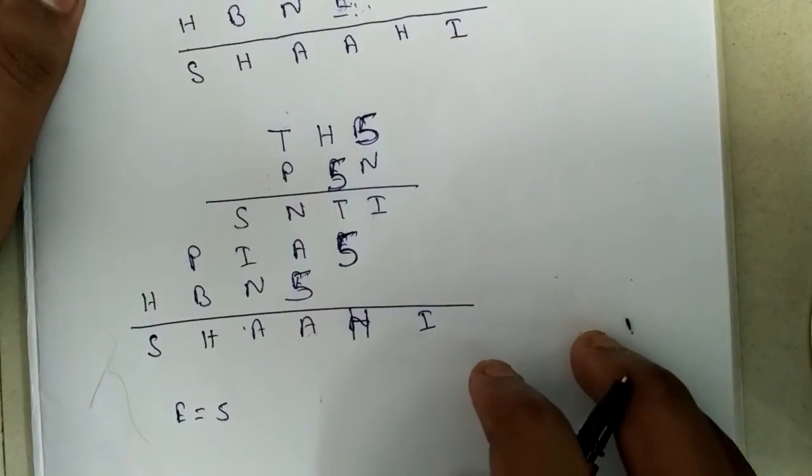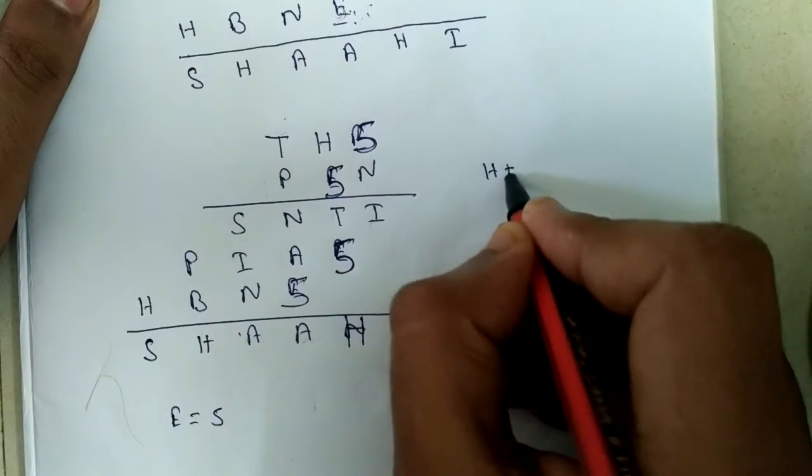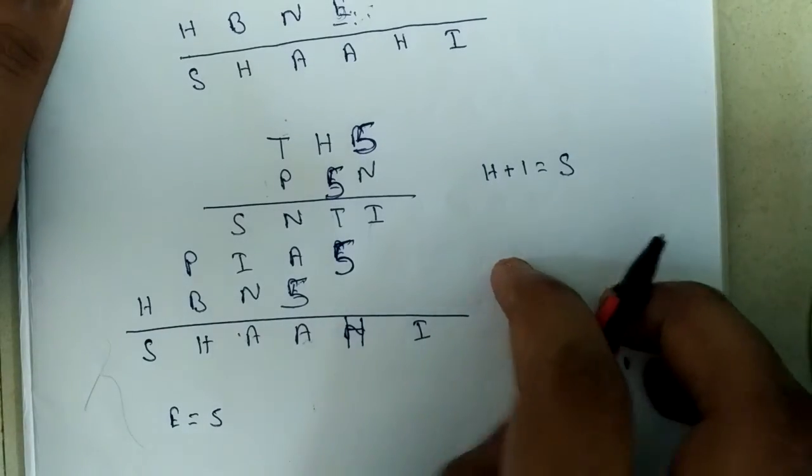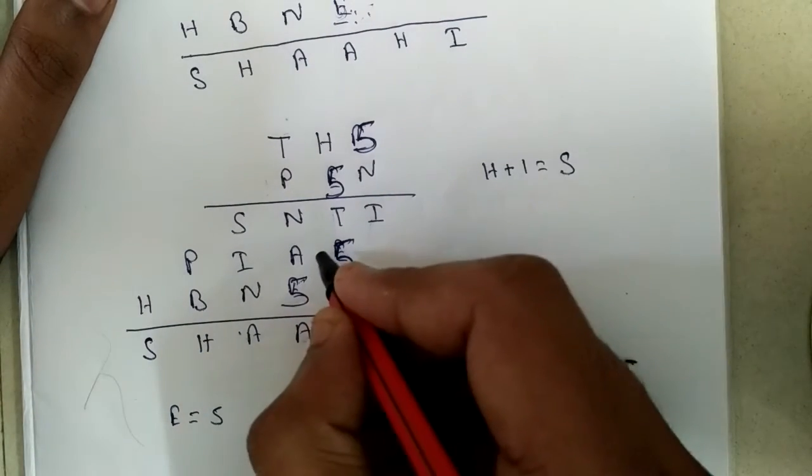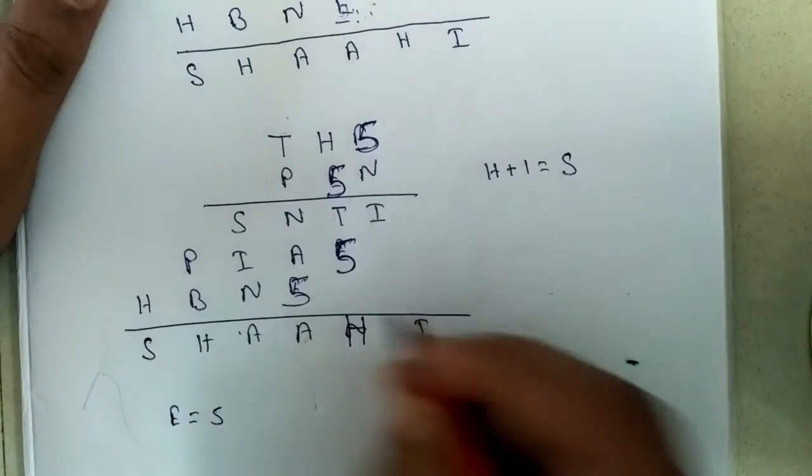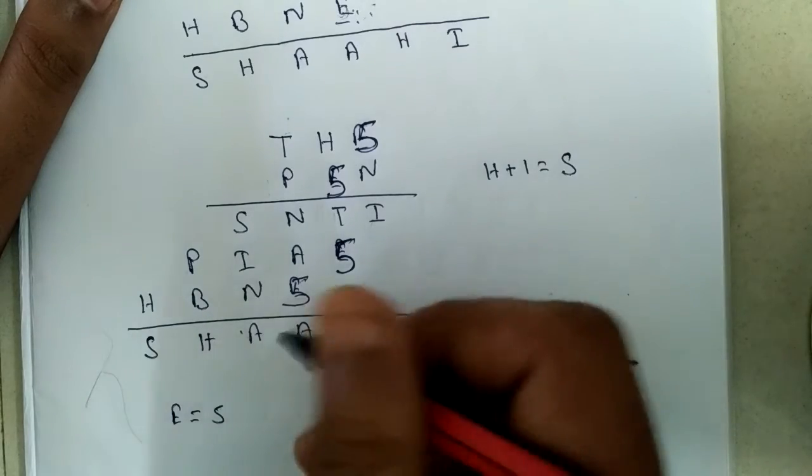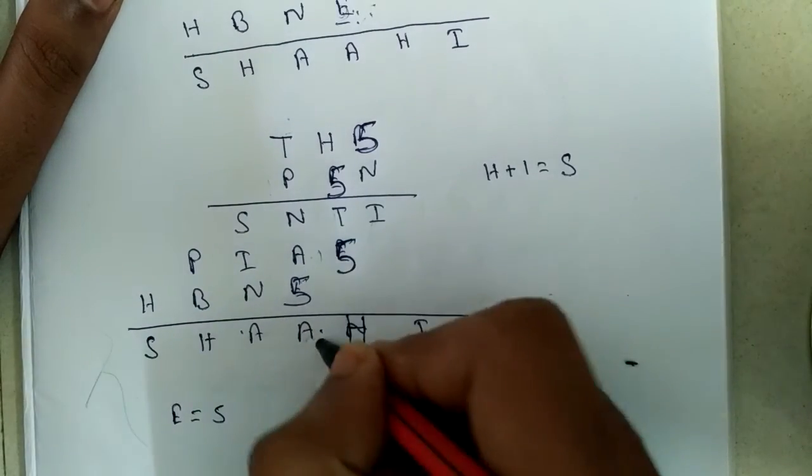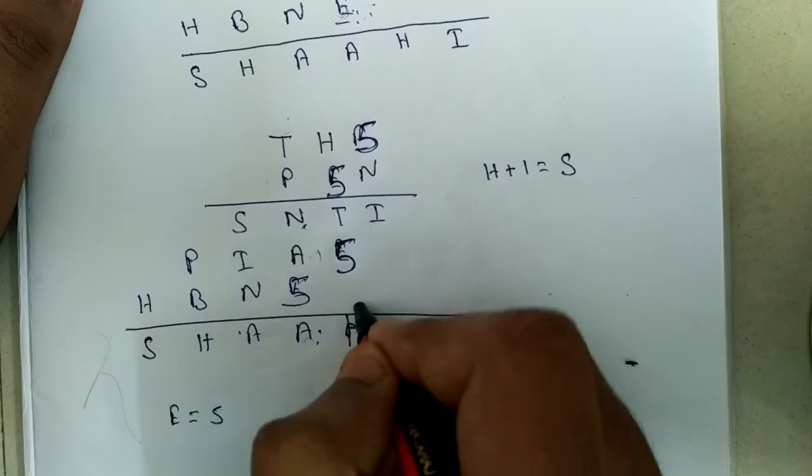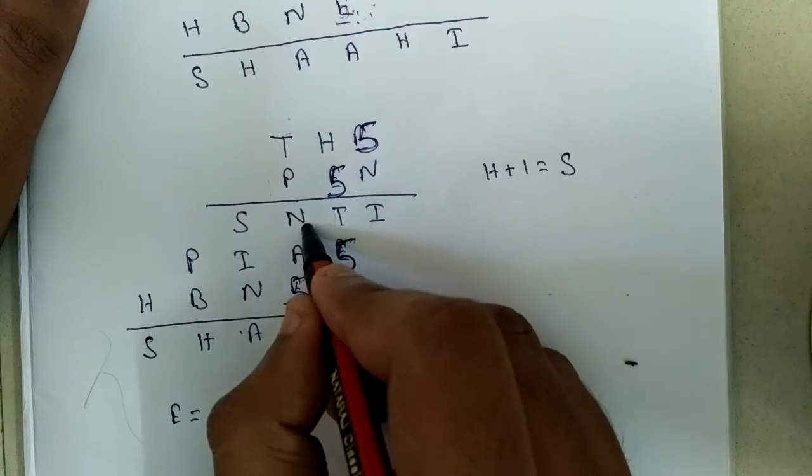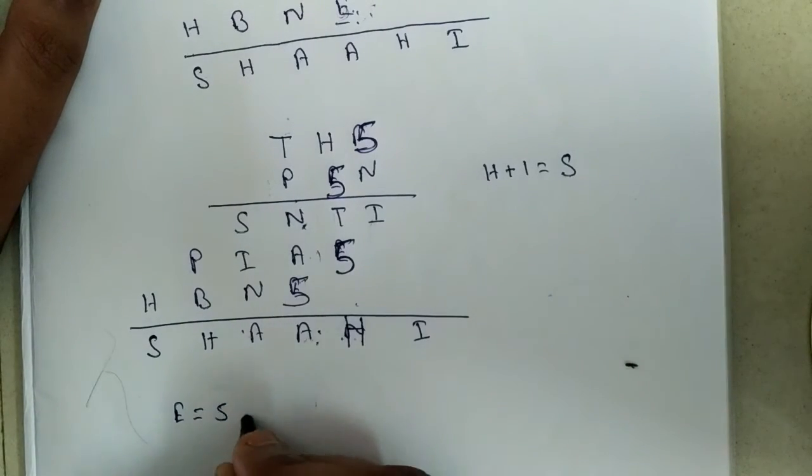Now try to solve in another way. Here see that H plus 1 equal to S. And see here, N plus A equal to 5. So by rule number 1, A plus B equal to A, then N equal to either 4 when 1 comes from here, and it is 5 when... But we have already concluded E equal to 5, then N must equal to 4. We have concluded N equal to 4.